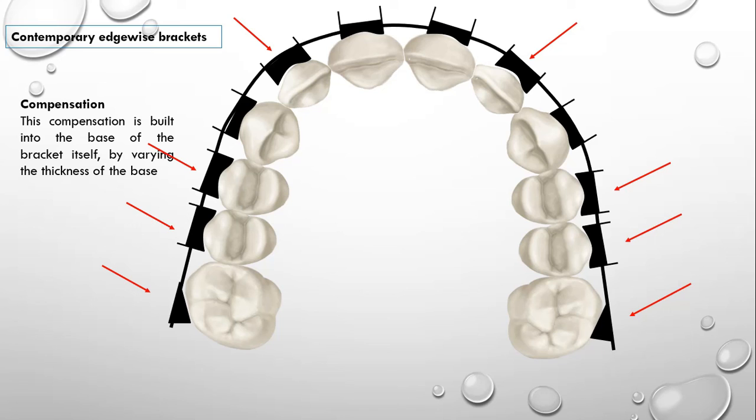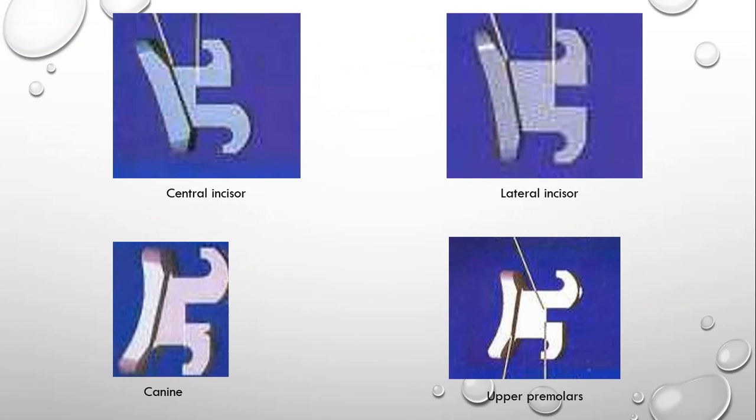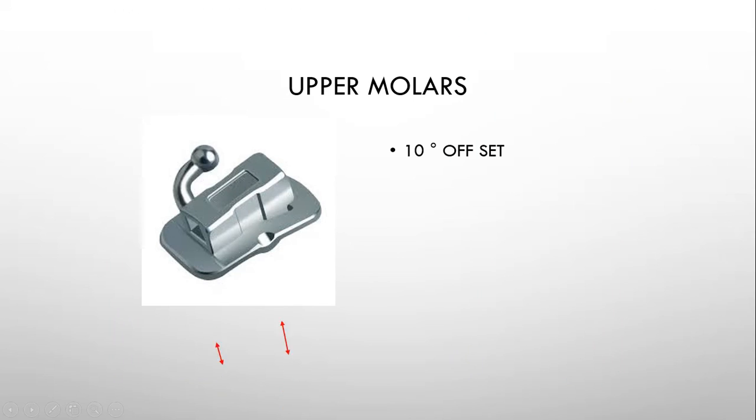Now, let me show you the profile of all the brackets. You must appreciate that the thickness of the base of the lateral incisor bracket is a lot if you compare it with the central incisor. Even the thickness of the premolar bracket is more as compared to the canine one. Same is with the molar tube. See the variation in the thickness of the base of this molar tube. We call it 10 degrees offset. And this is given just to get back the rotation of upper molar for an ideal occlusion.